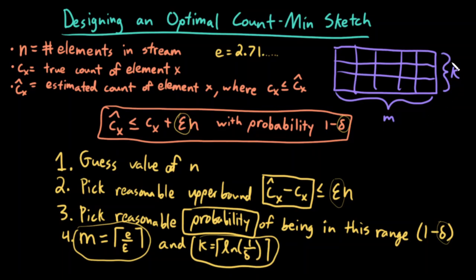Now with this, I can design an optimal count-min sketch for my purposes. As you might imagine, the smaller we want our range of error—the smaller we want this range of error—the bigger m would become. So I would have to use more columns to minimize this range.